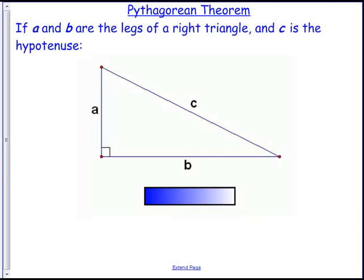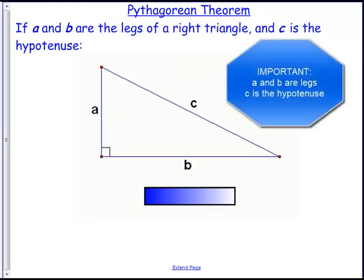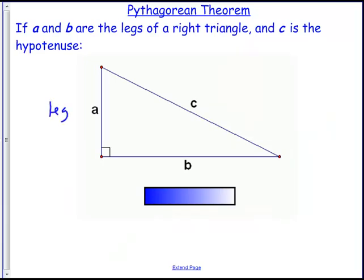Quick reminder, A and B are always legs when we're talking about the Pythagorean Theorem. The legs are A and B, and the hypotenuse is C. So as you're copying this into your notes, you might also remind yourself that A is a leg, and B is a leg, and C is the hypotenuse. That's pretty key to understand this.